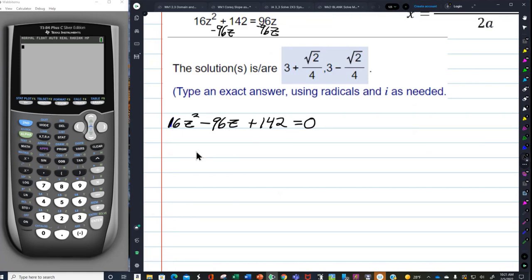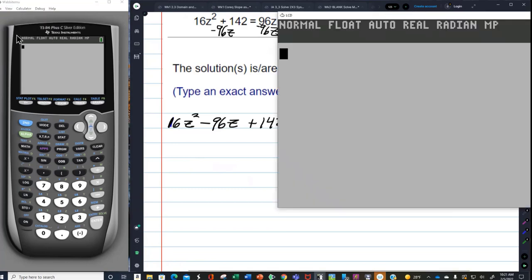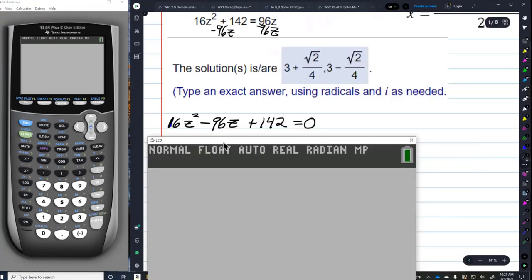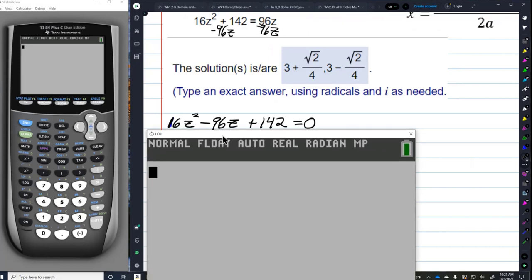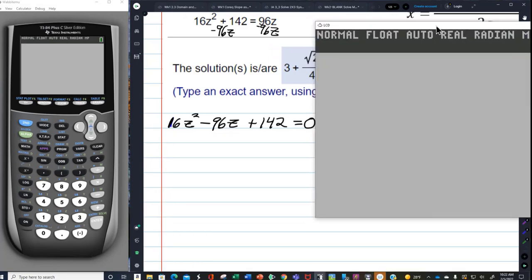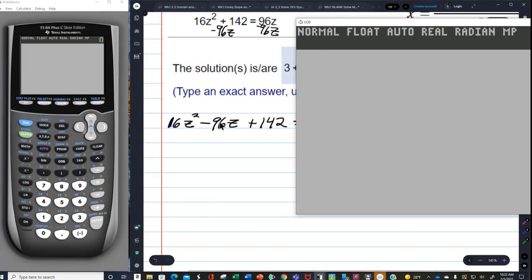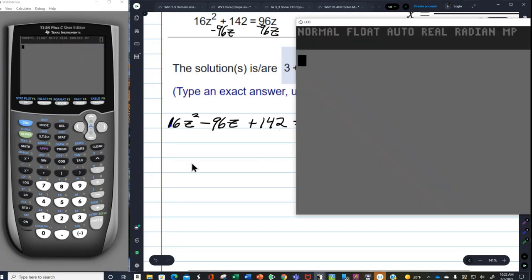This is a quadratic trinomial and we can solve it, but we can't solve it by factoring. Although, we are going to see if we can find a GCF. The more you can reduce these numbers, the better, the easier your work is going to be.